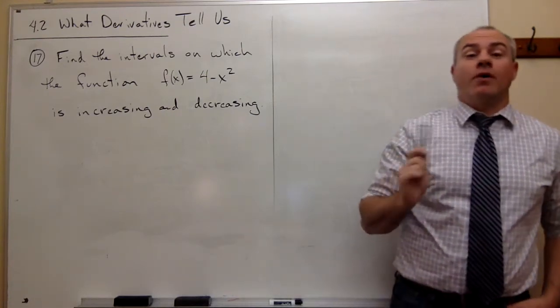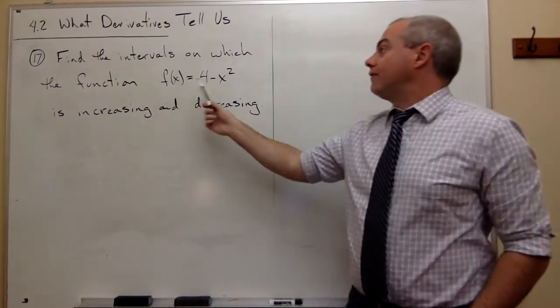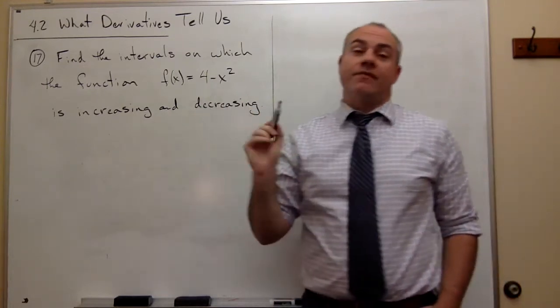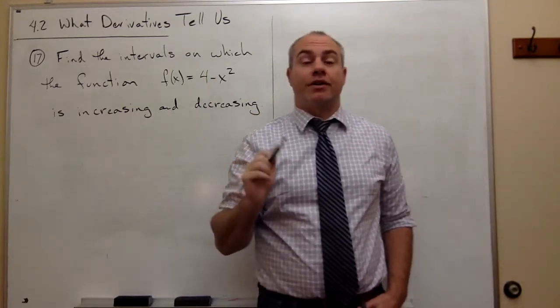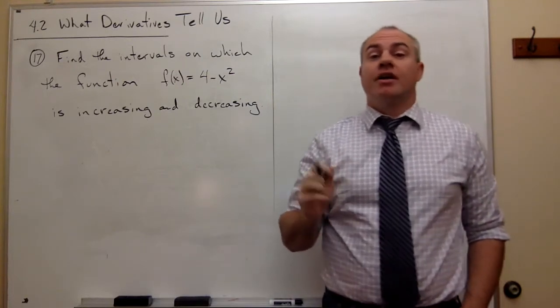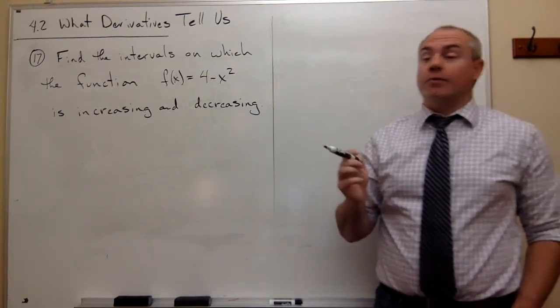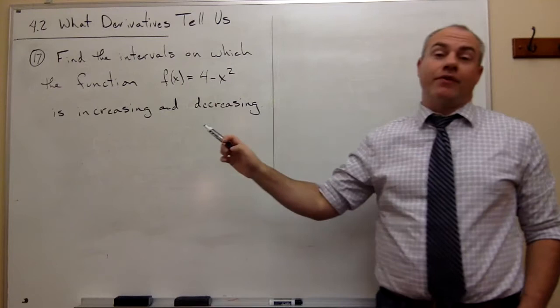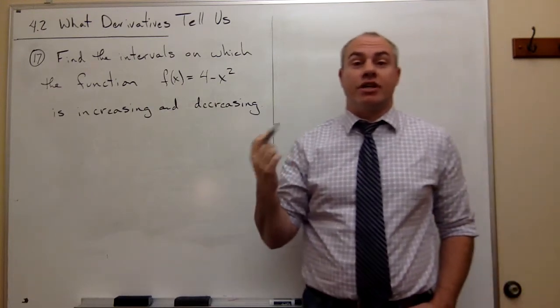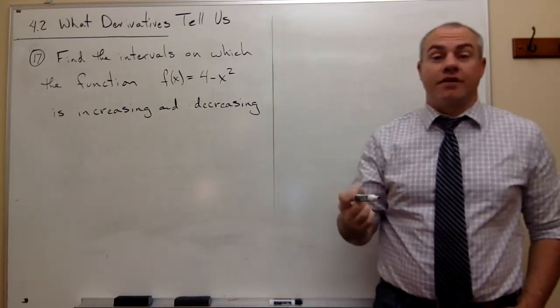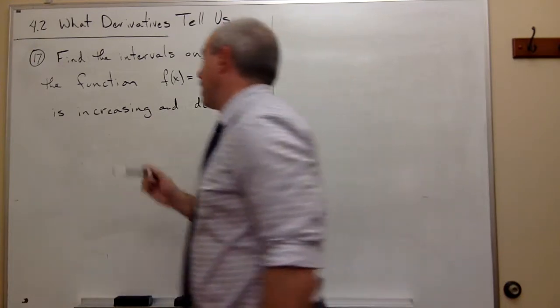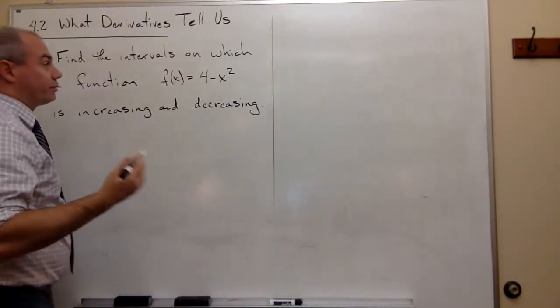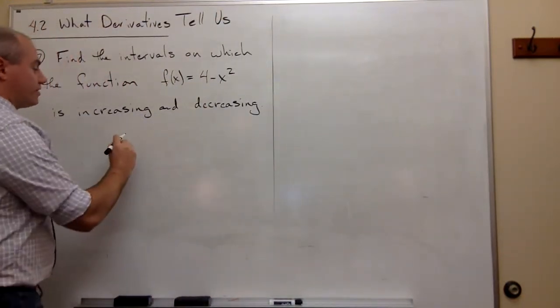So how we find where a function is increasing and decreasing is the very first thing we have to do is find the critical points for the function. To find any critical points, we have to take the derivative of the function and say where is that function equal to 0 or where is it undefined. So let's start by taking the derivative of this function and finding critical points.